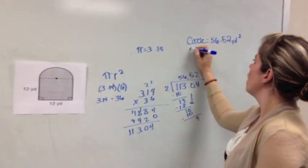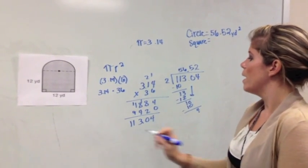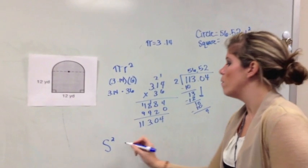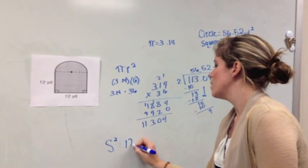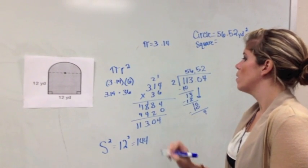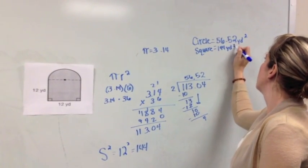Okay? Now I'm going to look for the area of my square. And I know the formula for that is S squared. So I see here that I have 12 as my side. And 12 squared we know is 144. So I'm going to have 144 yards squared for that area.